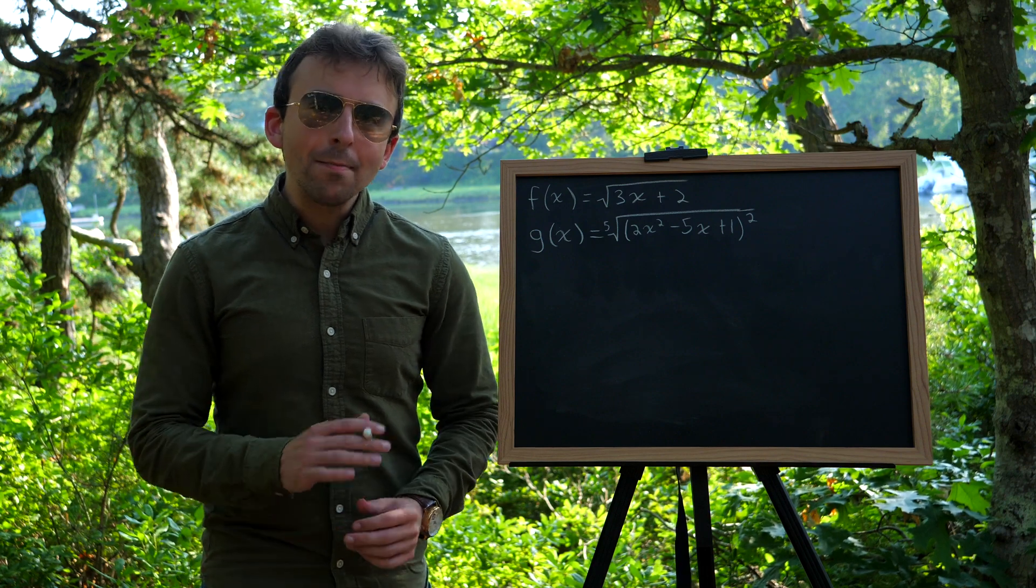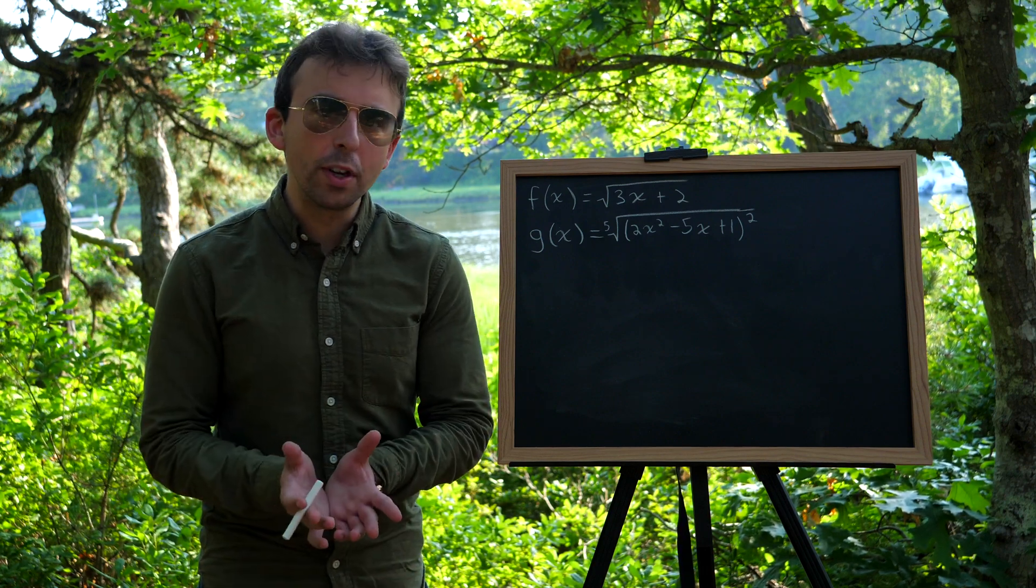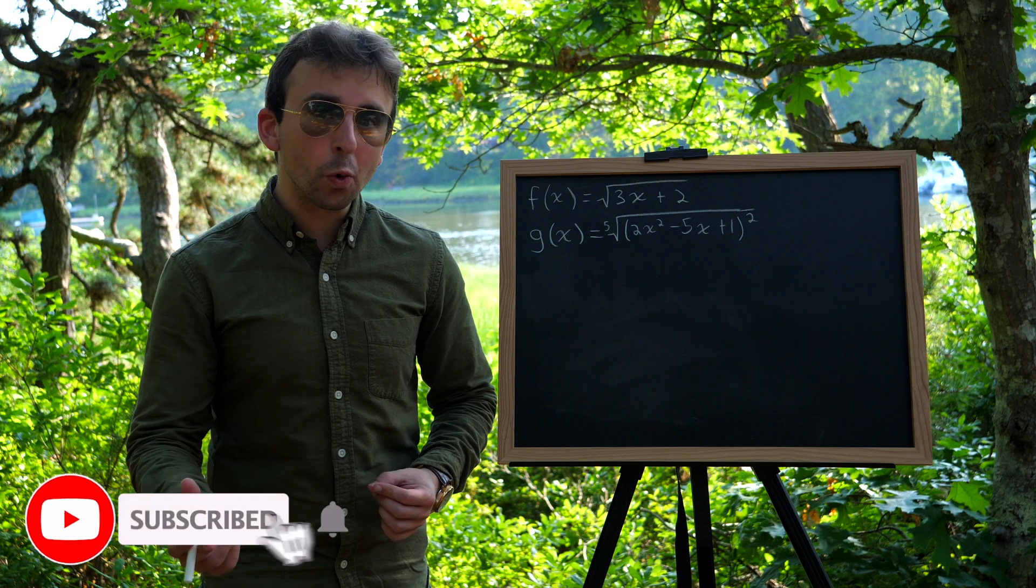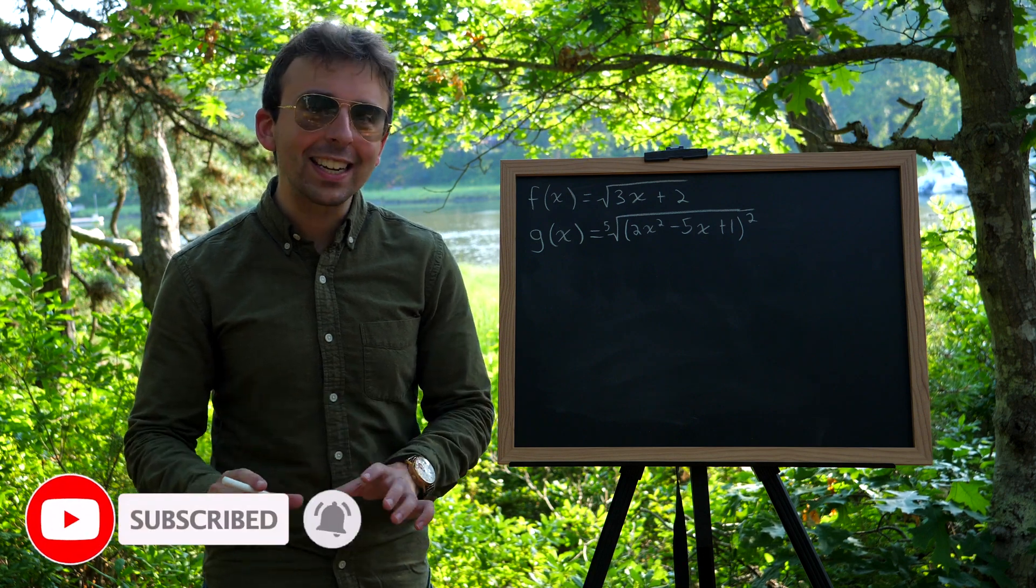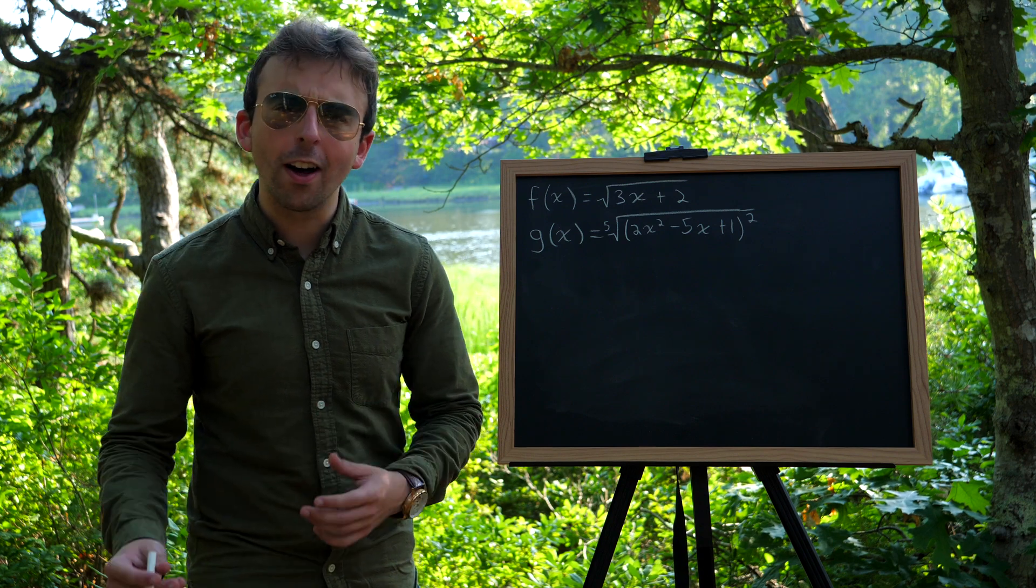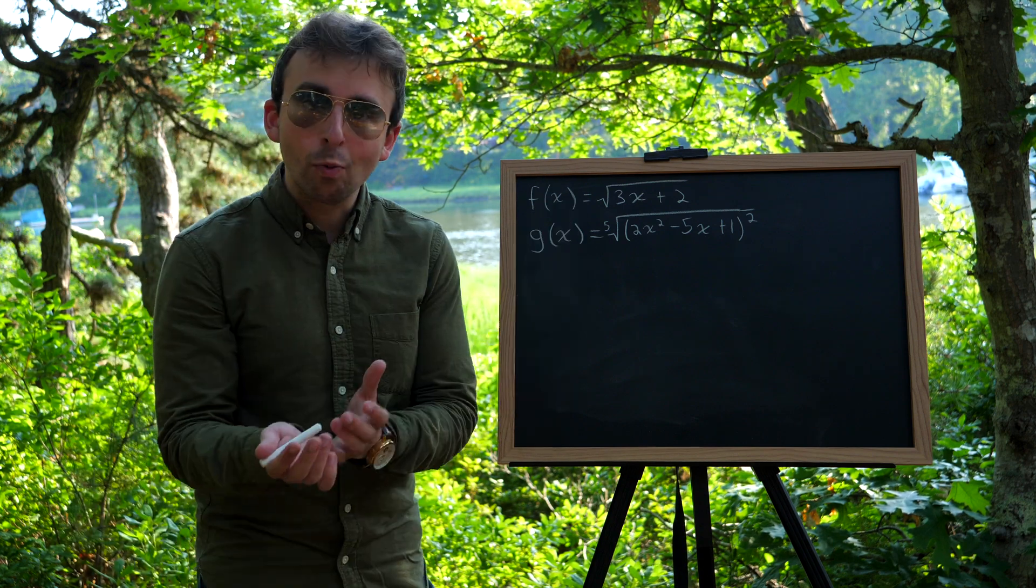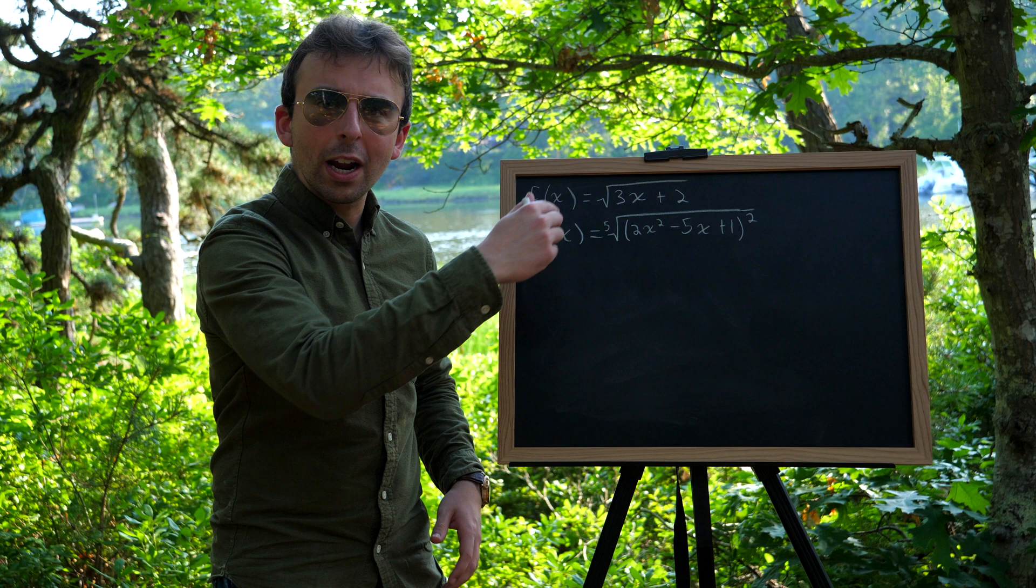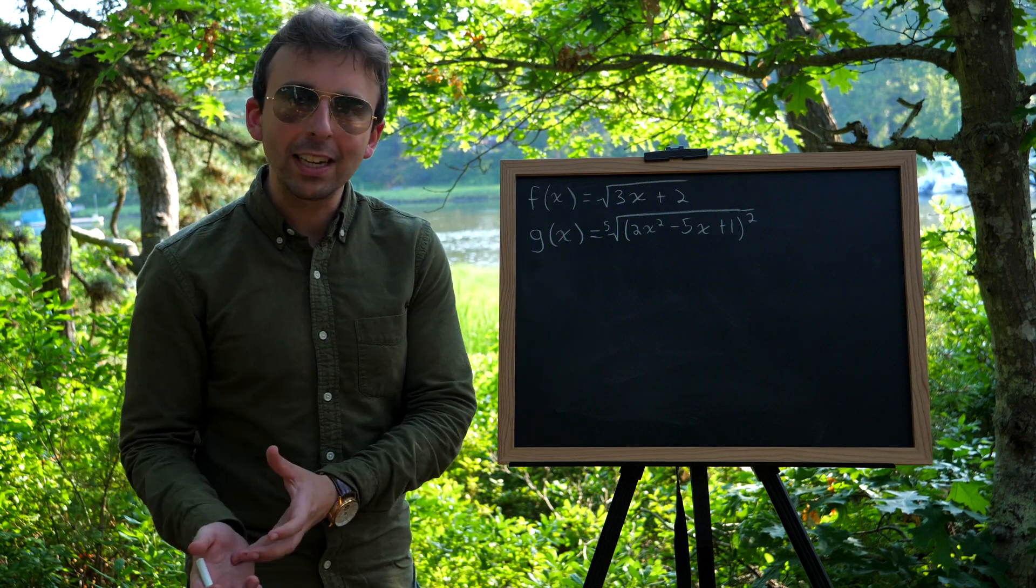I think the chain rule might be the slickest derivative rule, but it's also a rule that people very often screw up. One of the situations where people go wrong a lot is when you've got a radical function, when you've got square roots or other gnarly roots.